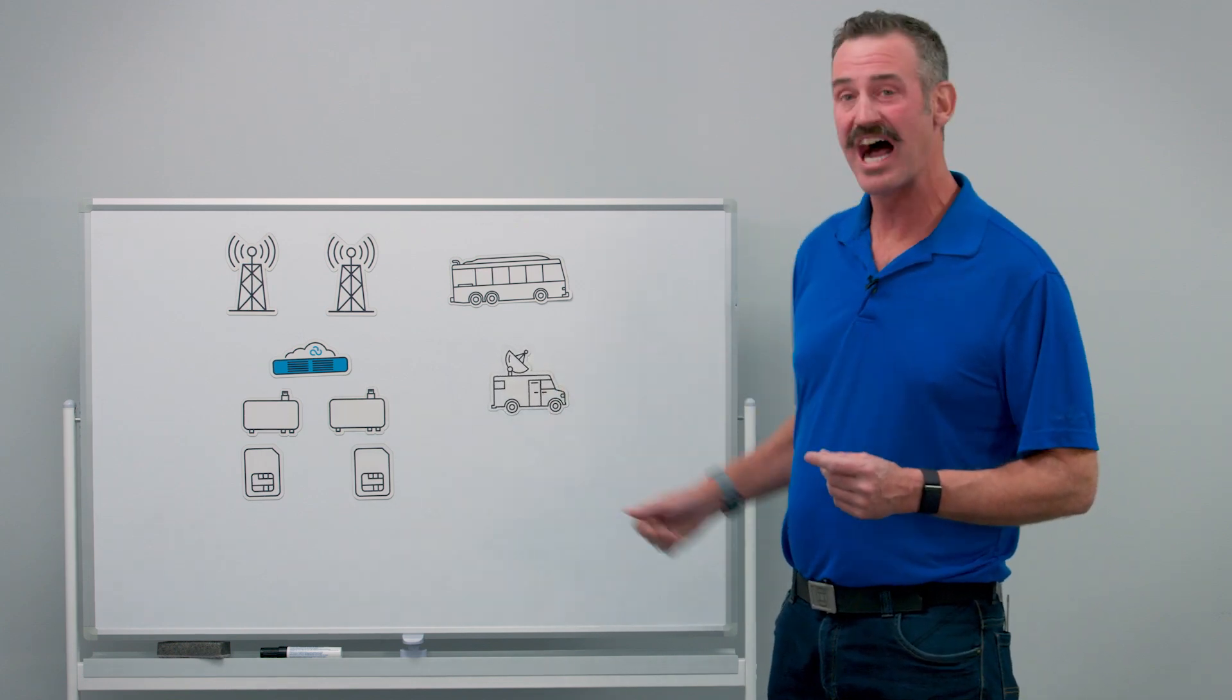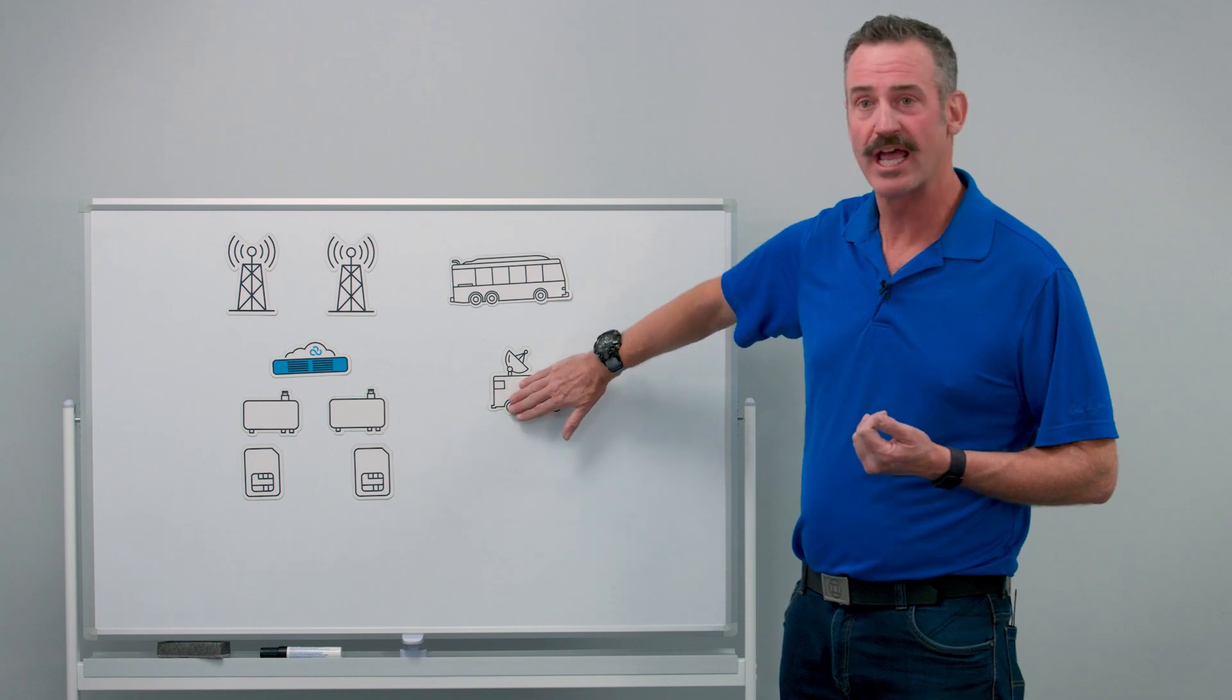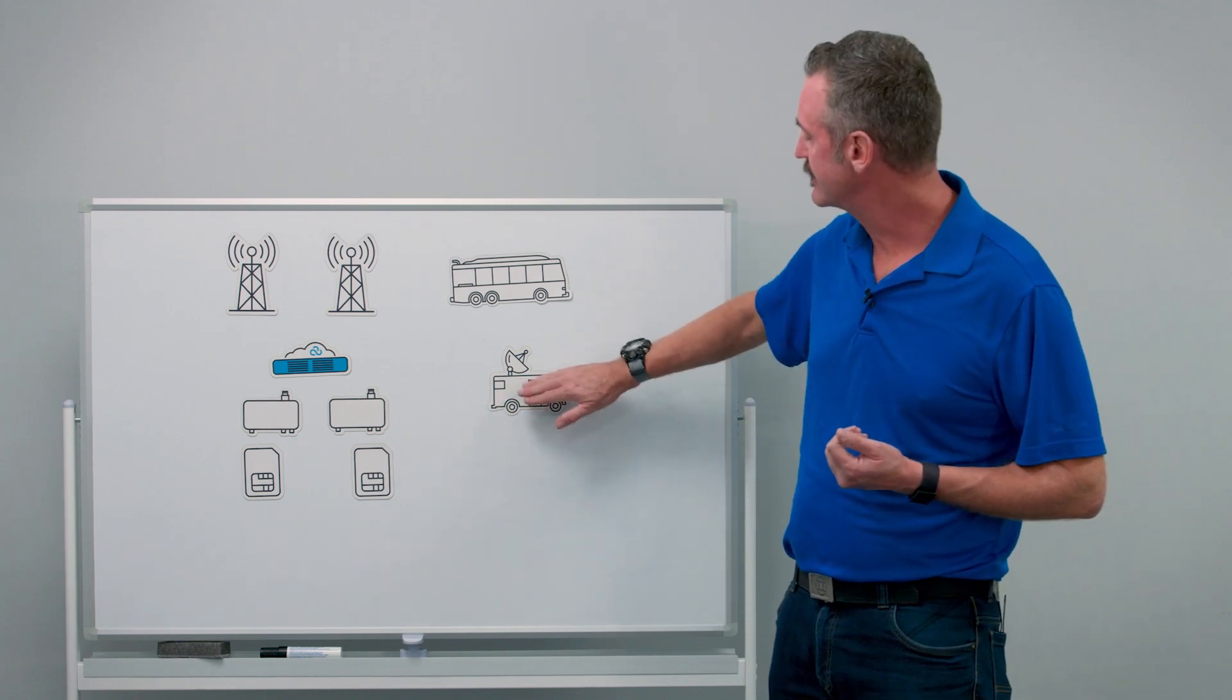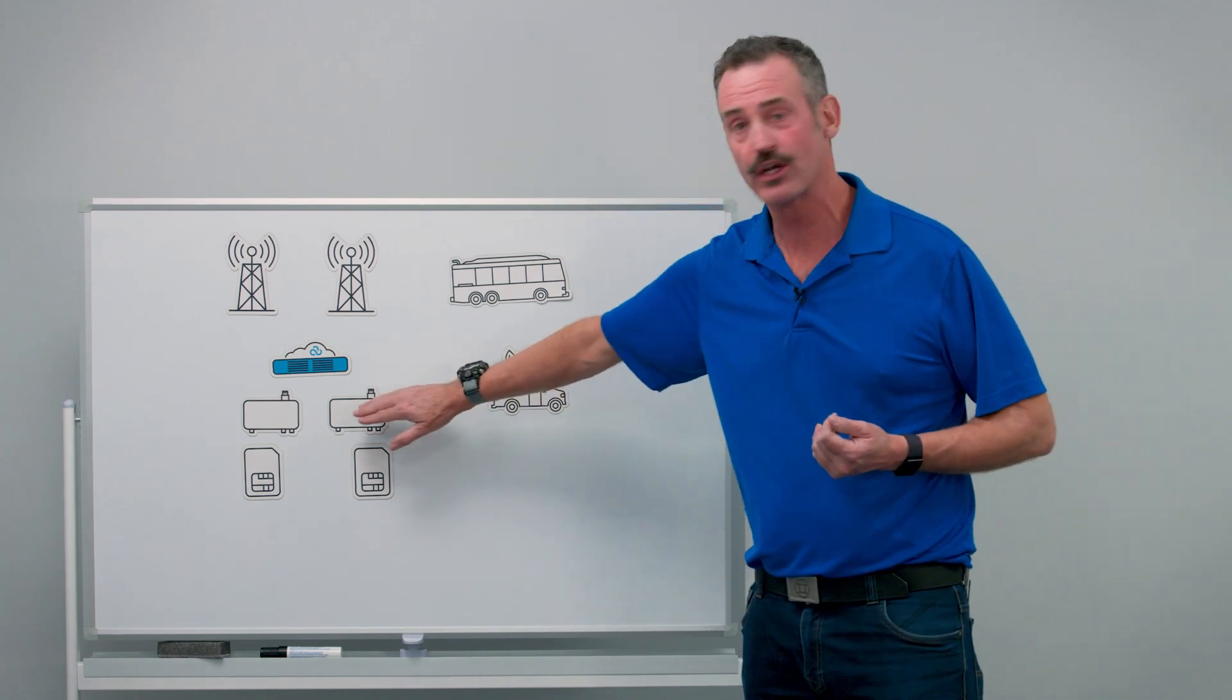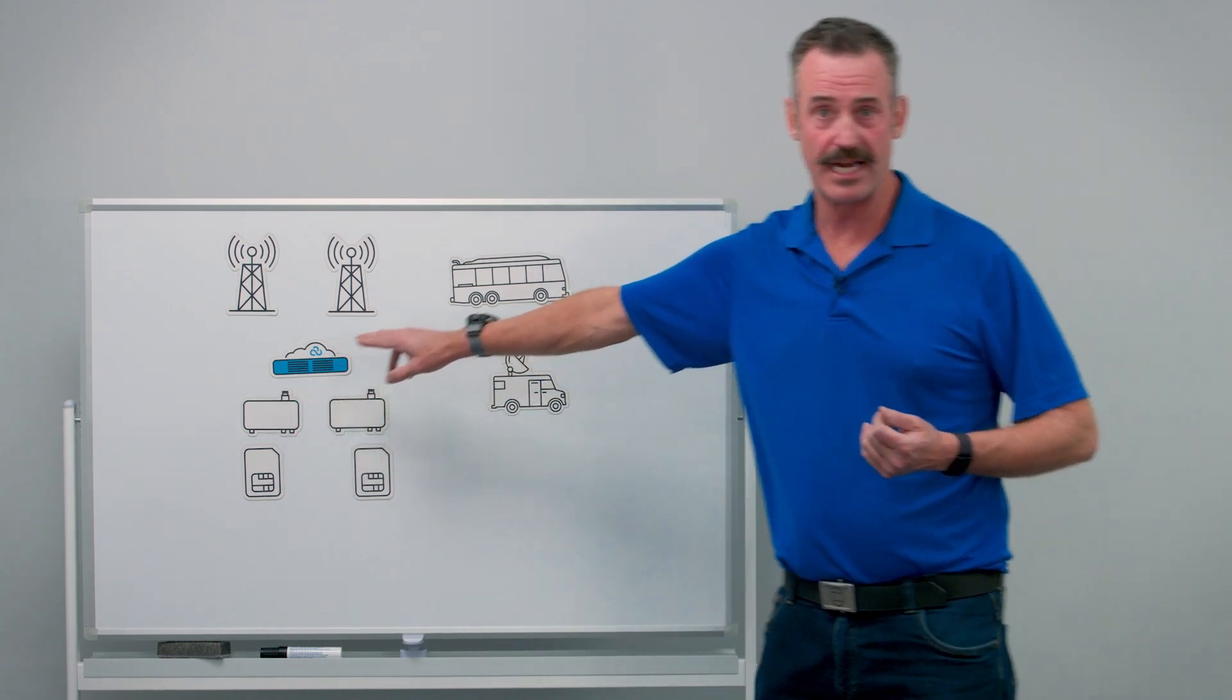Another use case may be isolating traffic per carrier. For example, I may want to have two active connections and steer all of my voice over IP traffic over my initial connection and all of my internet-bound traffic over my second connection.